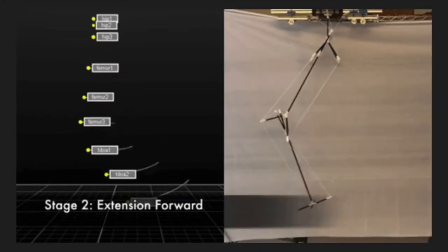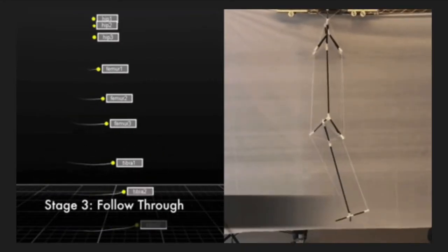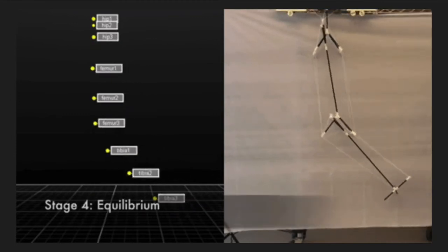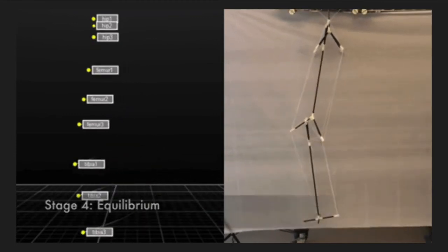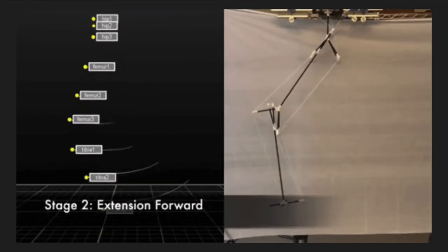The foundation of our simulation led us to the physical prototype shown here. As shown in the clip, by contracting or extending the three active tensile elements we are able to generate four stages of gait.